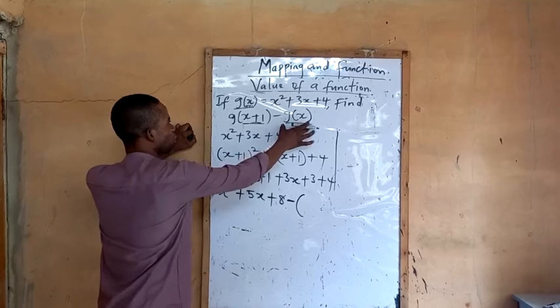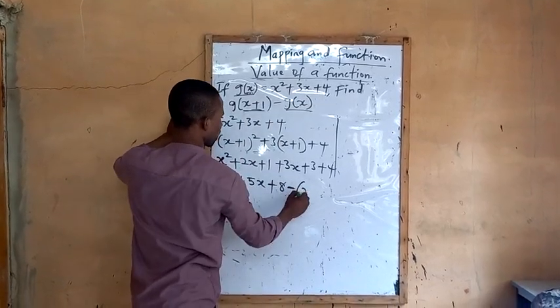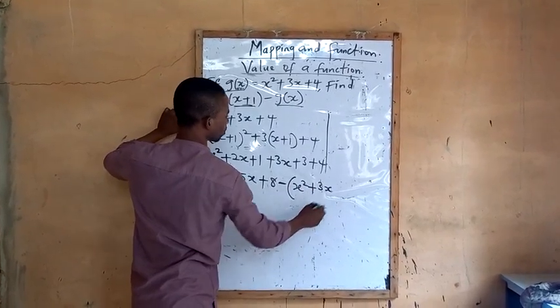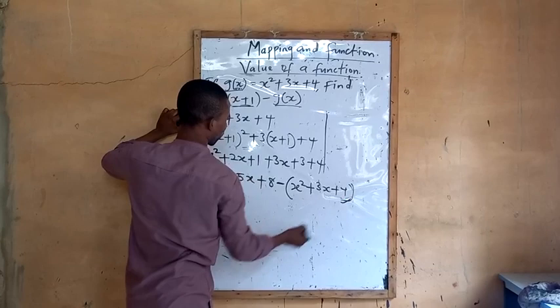g(x). And what is my g(x)? My g(x) is this: x squared plus 3x plus 4. Close the bracket.